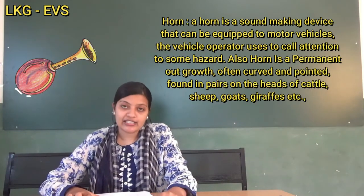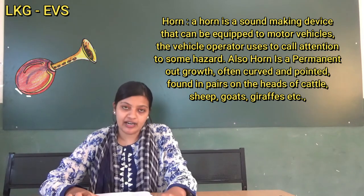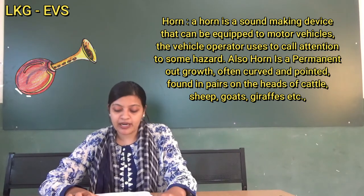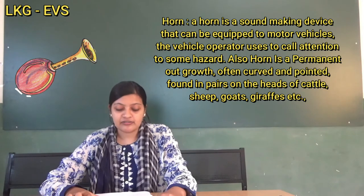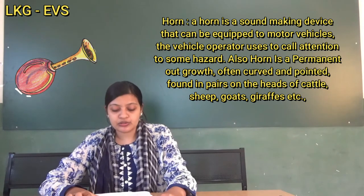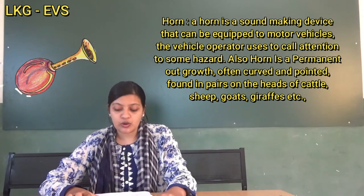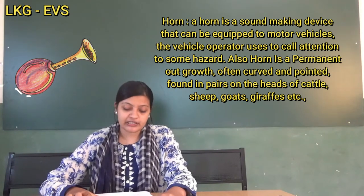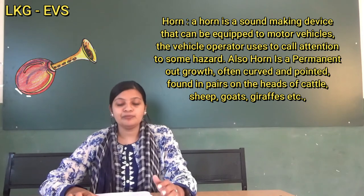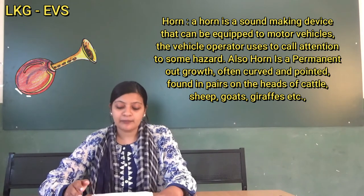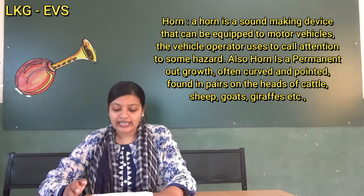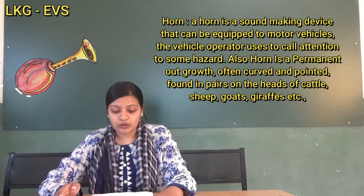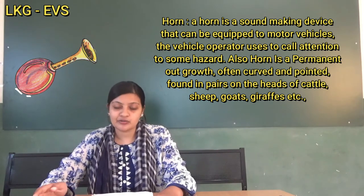Next, horn. H-O-R-N. Horn: a sound-making device that can be equipped to motor vehicles, which the vehicle operator uses to call attention to some hazard. Also, a horn is a permanent outgrowth, firm, curved, and pointy, found on the heads of cattle, sheep, goats, giraffes, and so on.